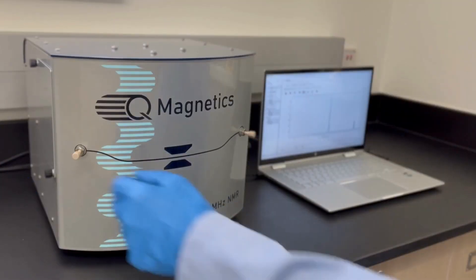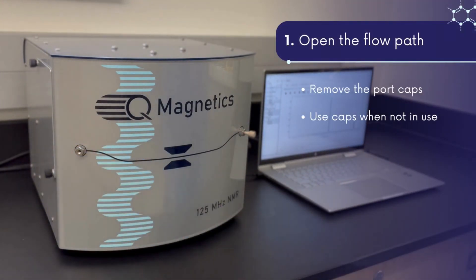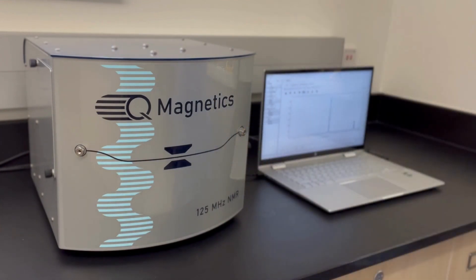When you are ready to use the QM125, open the flow path by removing the caps from the inlet and outlet ports. If the instrument is not in use, it is a good idea to keep the flow path enclosed with the caps.